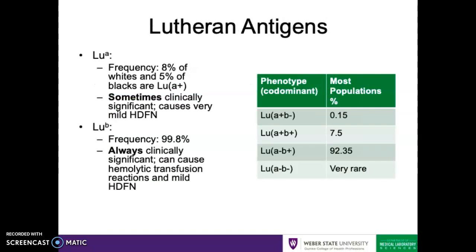The most common Lutheran antigens include Lutheran antigen A and B. Lutheran antigen A is a fairly low frequency antigen — 8% of whites and 5% of blacks respectively are going to be Lutheran A positive. Because antibodies to the Lutheran A antigen are sometimes reactive at 37 degrees Celsius, they can sometimes be clinically significant and may cause some mild HDFN.